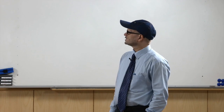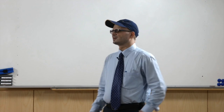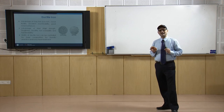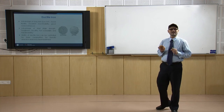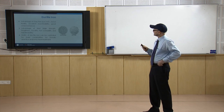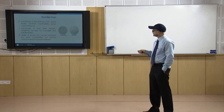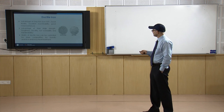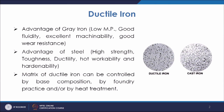First we will discuss ductile iron, also known as SG iron — spheroidal graphite iron. In this case the carbon is in the form of spheroids or nodules of varying sizes. These nodules provide benefits that graphite flakes are not able to give.